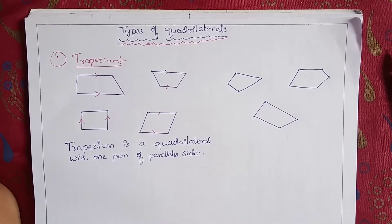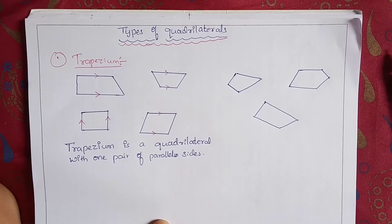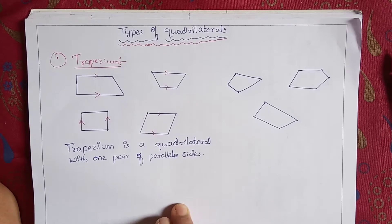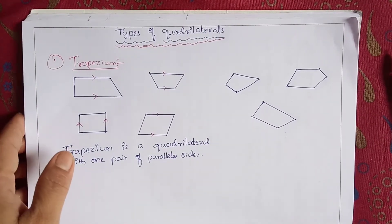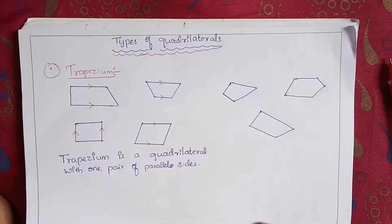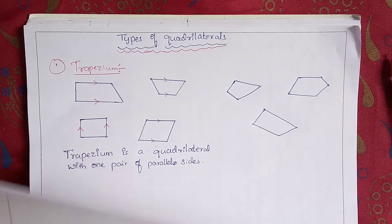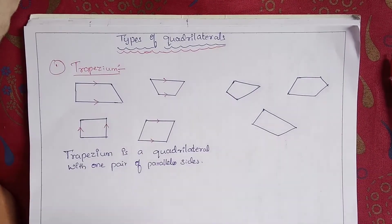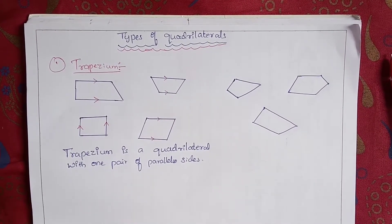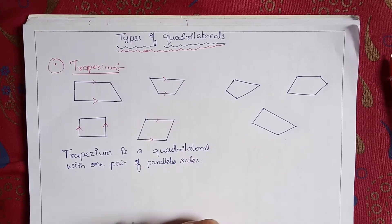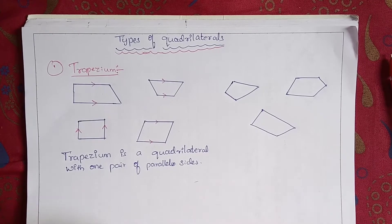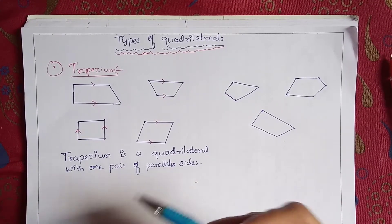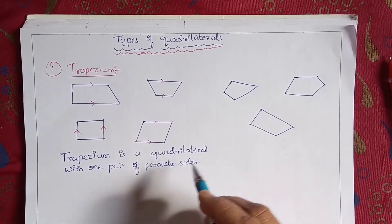Hello children! In the last video we discussed and learned about the first exercise of quadrilaterals and the concept of the quadrilateral. So today in this video we will discuss about the types of quadrilaterals. I have drawn some shapes of the quadrilaterals in which I explained about the trapezium, parallelogram, rhombus, kite, square, and rectangle.